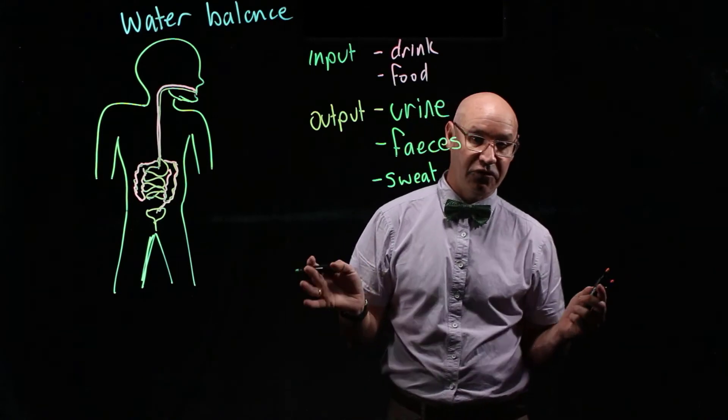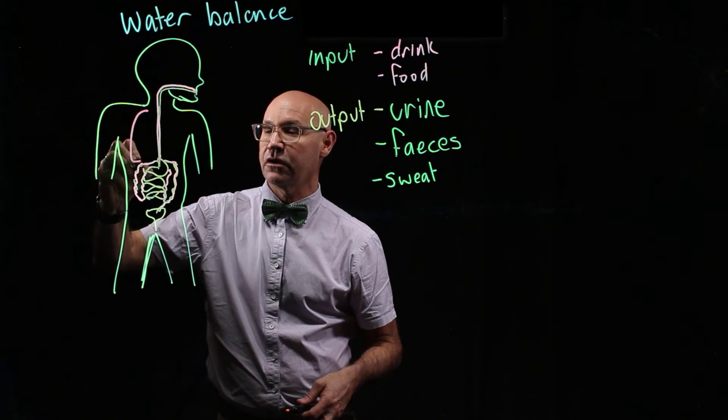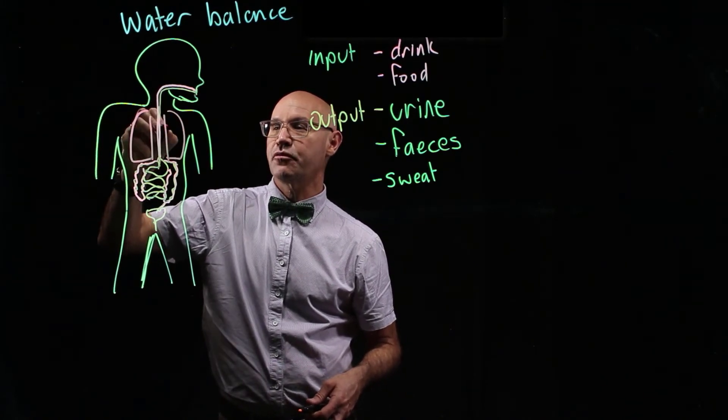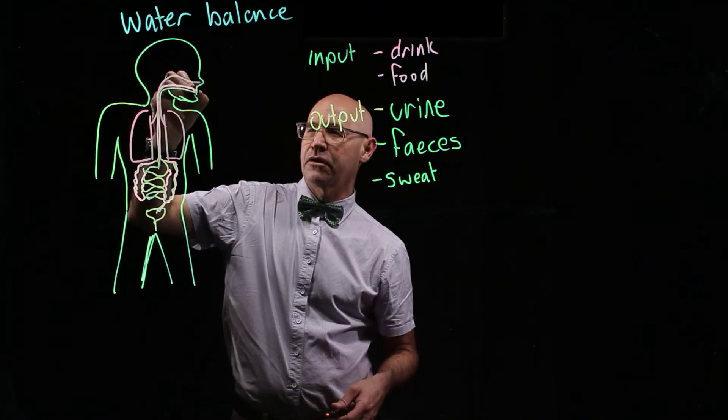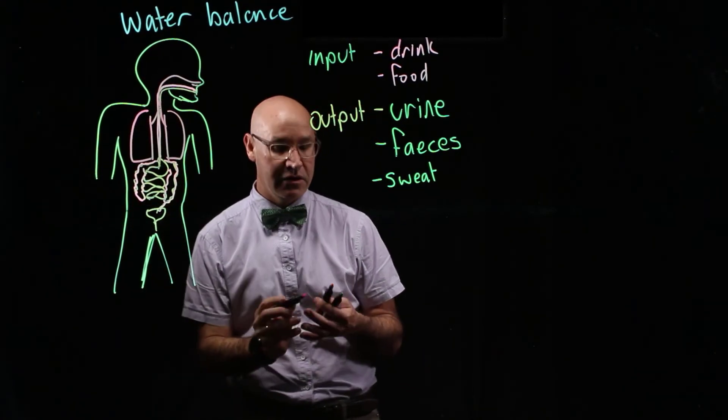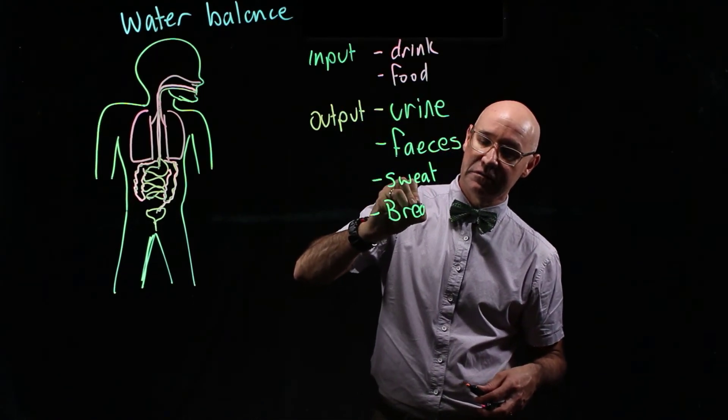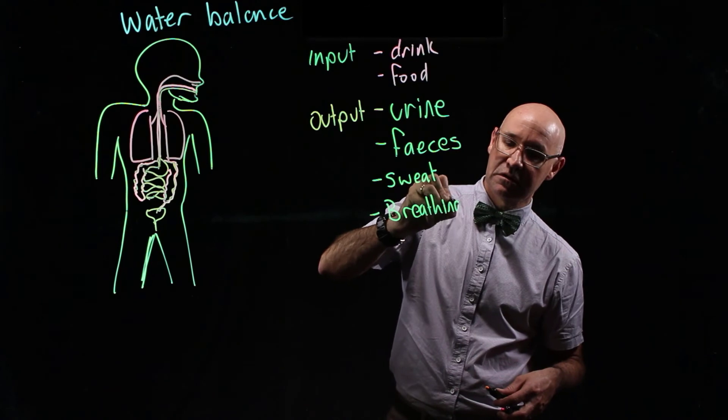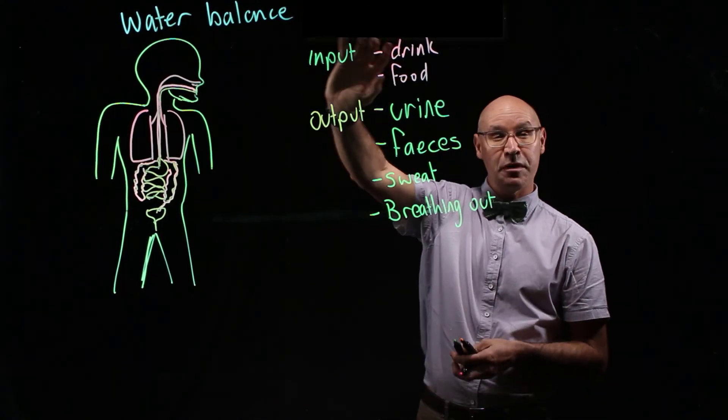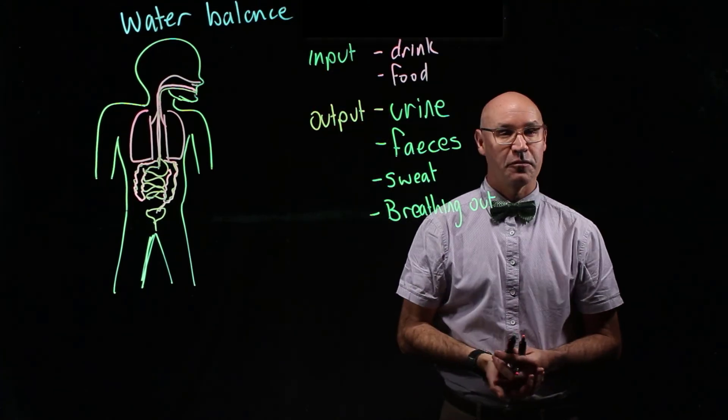The last one is through the lungs. So when we breathe out, we actually breathe out water vapor. So through the nose and also through the mouth, we actually breathe out water vapor. So breathing out, or expiration, is another way of describing it. So two inputs and four outputs of water from the body.